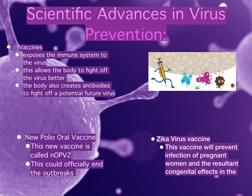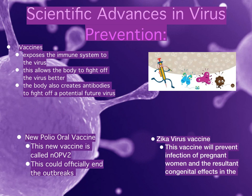Scientific advancements in virus prevention. The most common medical way for prevention against viruses is through the use of vaccines. Vaccines are a weakened version of the virus injected into the patient. The vaccine functions to expose the immune system to the virus so that the body can create antibodies to fight off the same virus in the future. A person is not guaranteed to never get that virus again because if it enters the body as a different strain than the vaccine strain, the new strain can attack the body. One new advancement is the Zika virus vaccine — the Zika virus can be passed to humans through a mosquito bite, and researchers hope the vaccine will prevent infection of pregnant women and congenital effects on the unborn child. Another advancement is the new polio oral vaccine, called the NOPV2, which aims to officially end polio outbreaks, with scientists seeing better results each time testing is conducted.